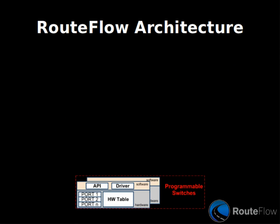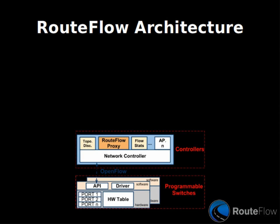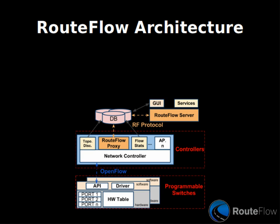RouteFlow is a modular architecture based on three pieces of software. We have OpenFlow switches connected to one or more OpenFlow controllers. Each controller runs a simple application called the RouteFlow proxy, which abstracts the controller on OpenFlow protocol specific APIs.